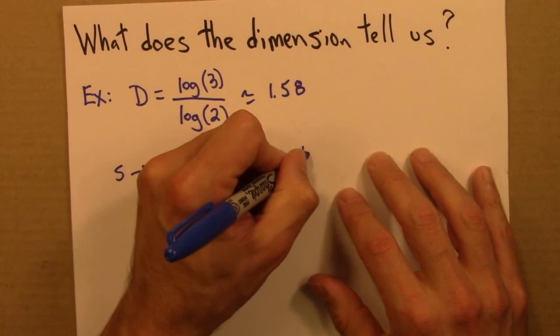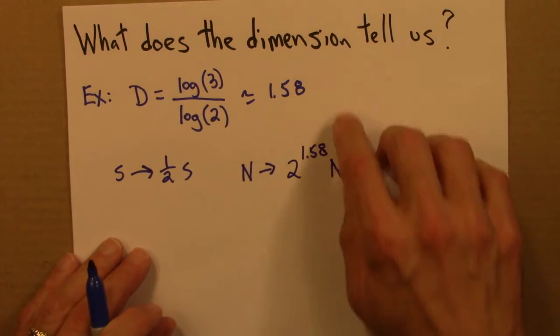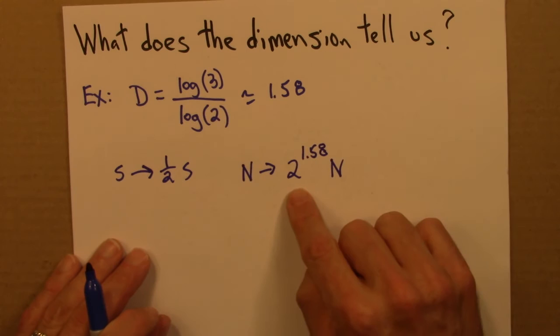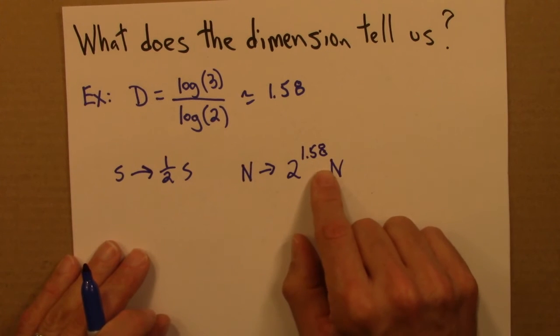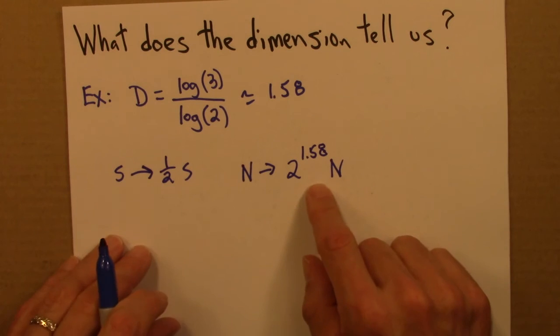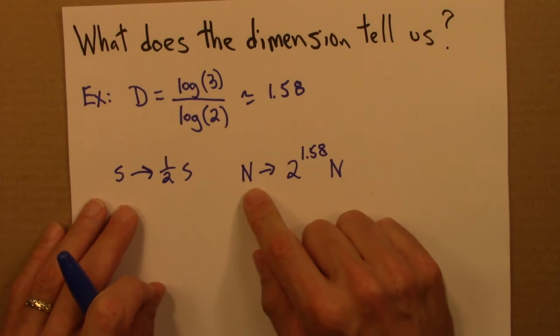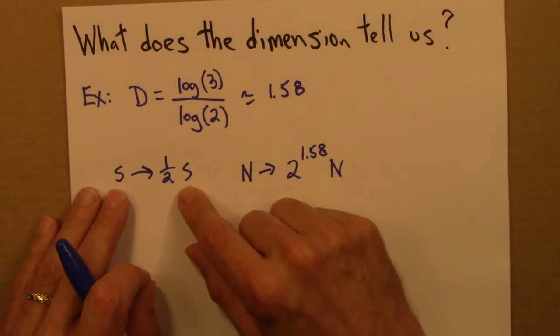What would happen to the number of boxes needed to cover it? Well, that would go up by 2 to the 1.58. If it was two-dimensional, right, this goes up by 2 squared, 4. If it's one-dimensional, it goes up by 2. Here it's something that's in between. So this tells us how certain properties of the shape, in this case the number of boxes needed to cover it, change as the size of the box changes.